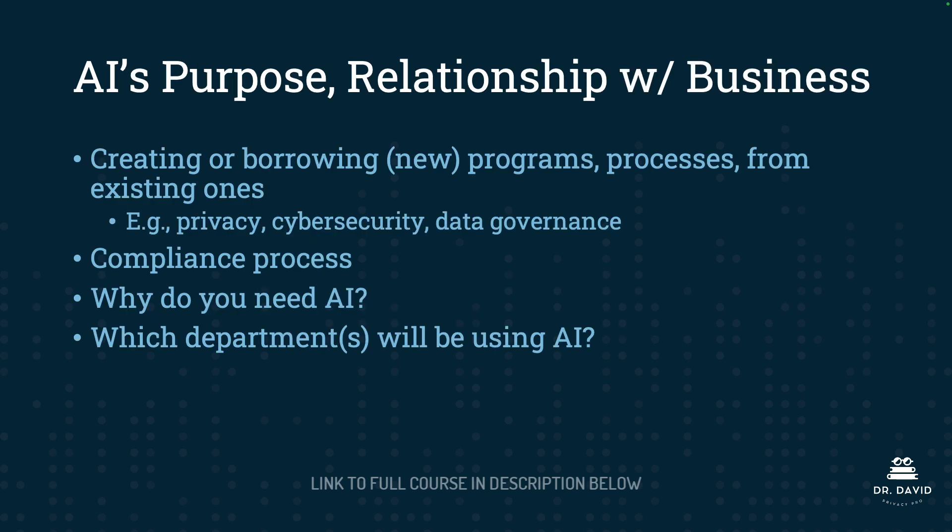Finally, you need to consider the AI system's purpose and the relationship of the system with your business. When standing up an AI governance body and establishing a framework for your organization, you need to consider whether you're going to be creating a new framework and governance body, or borrowing from existing structures and leveraging existing programs and processes. You can consider lessons learned from privacy, cybersecurity, and data governance — connecting with folks in those business functions to learn what's gone well, what hasn't, their strengths and weaknesses, and using that information to tackle your new responsibilities. Similarly, you need to think about the compliance process, what risk assessments need to be done, and what type of safeguards or standards need to be met.